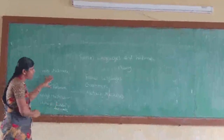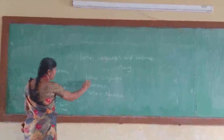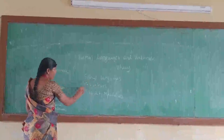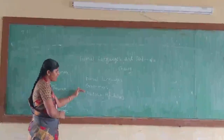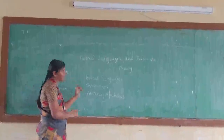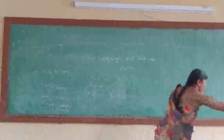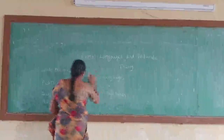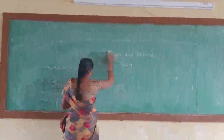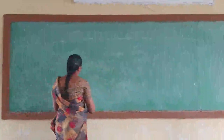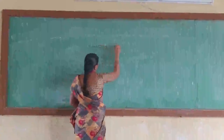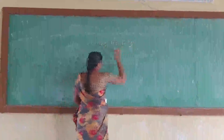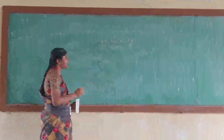These abstract notions access formal languages. Formal languages are generated by grammars. For these languages — grammar and abstract notions — we have the Chomsky hierarchy, given by Noam Chomsky.